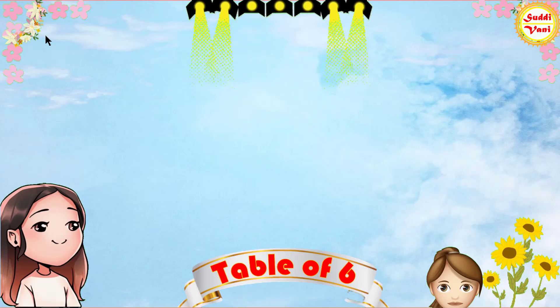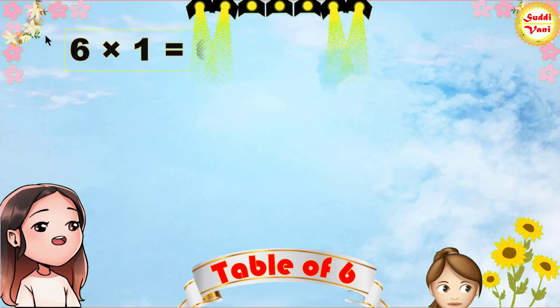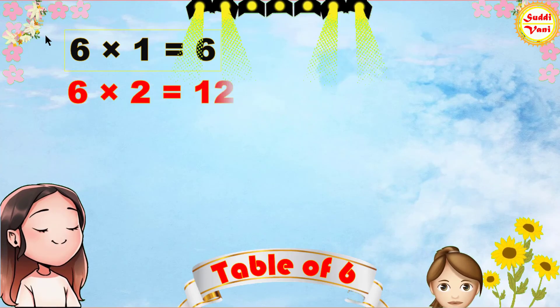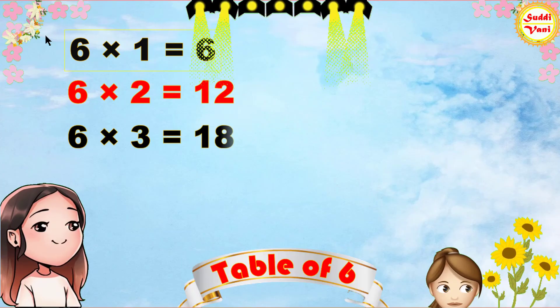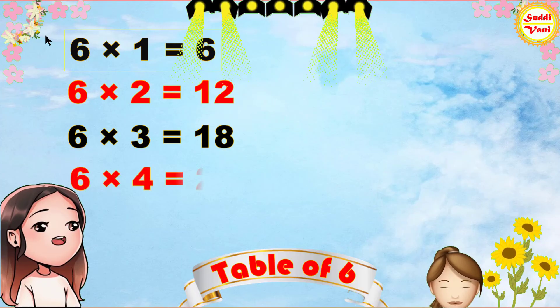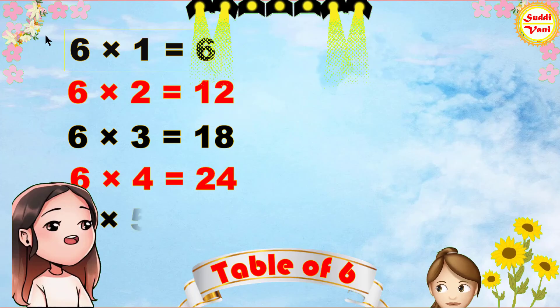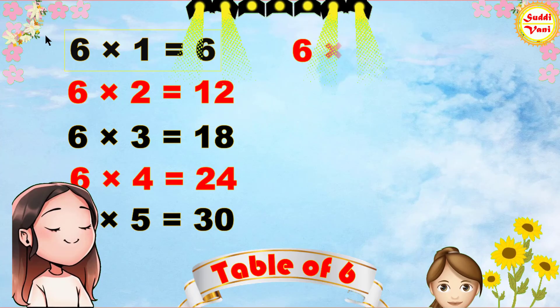Once again: six ones are six, six twos are twelve, six threes are eighteen, six fours are twenty-four, six fives are thirty.